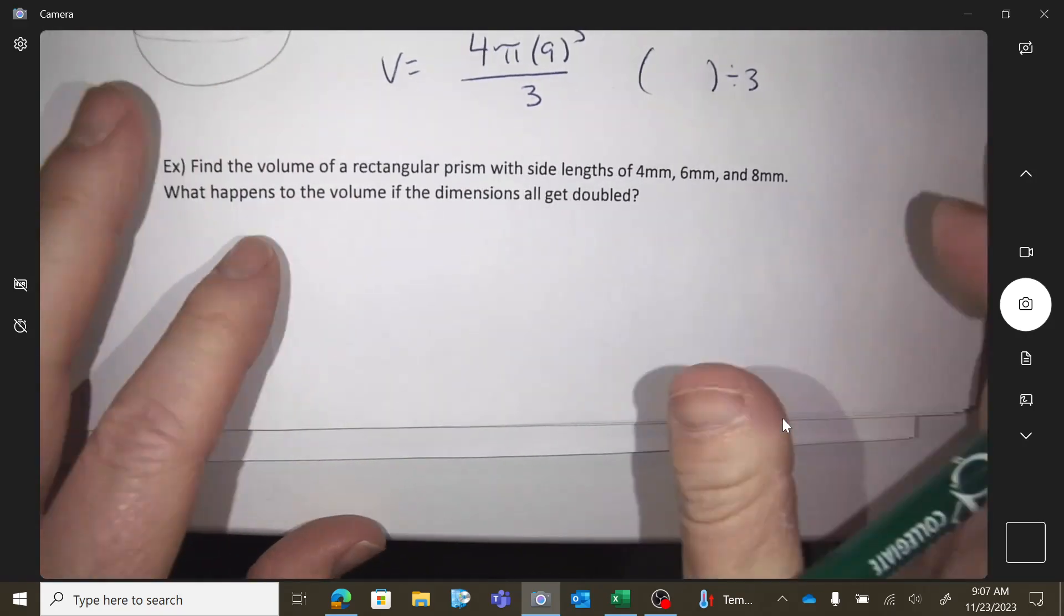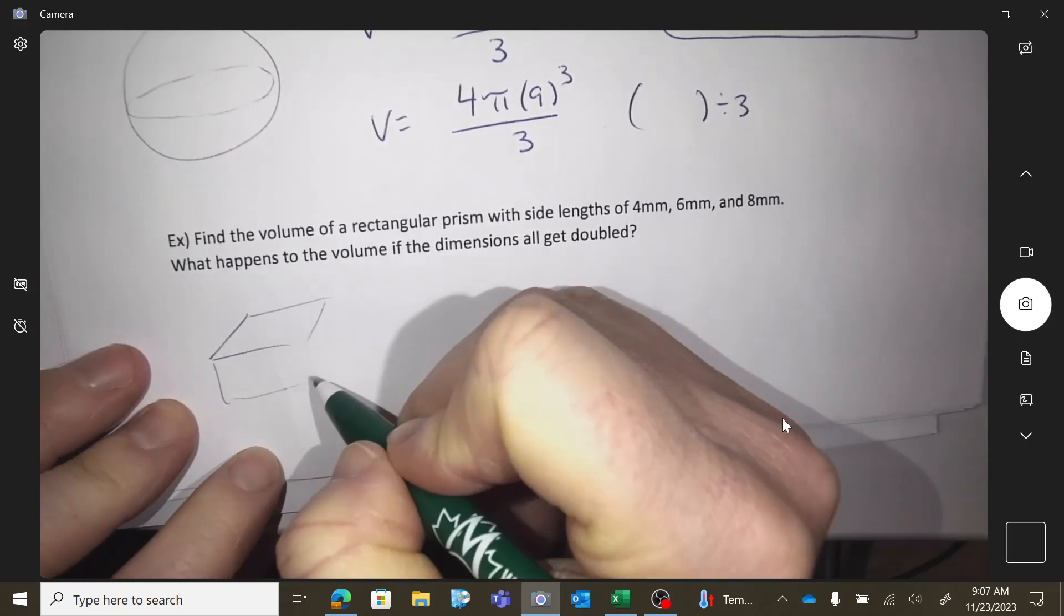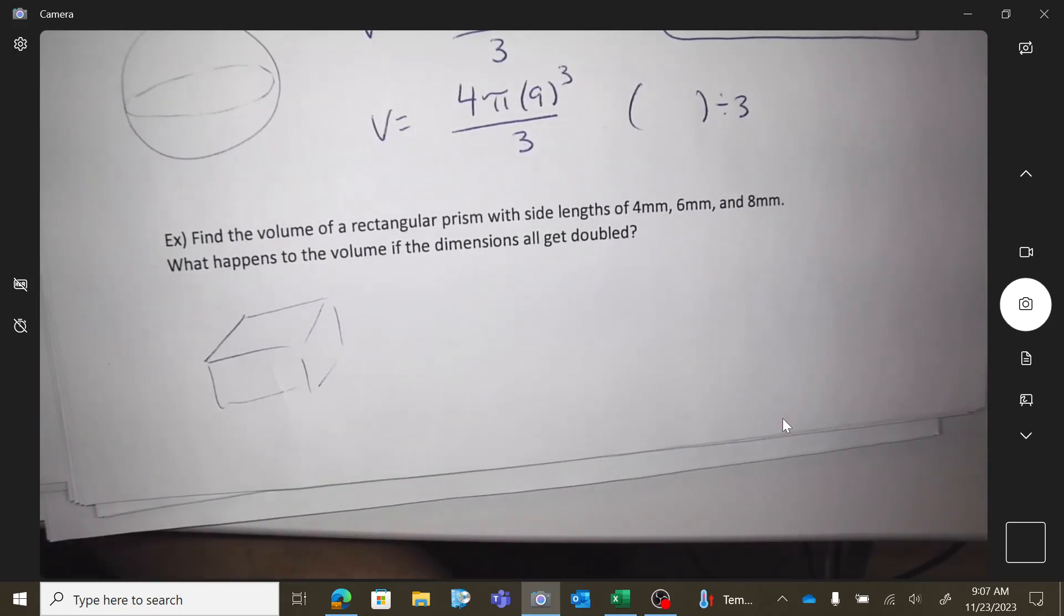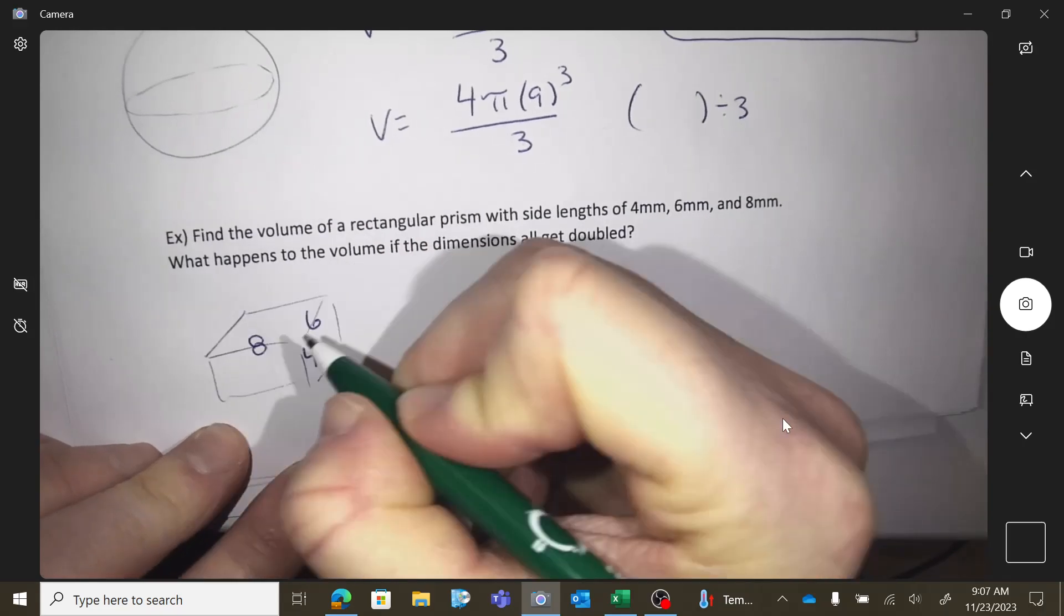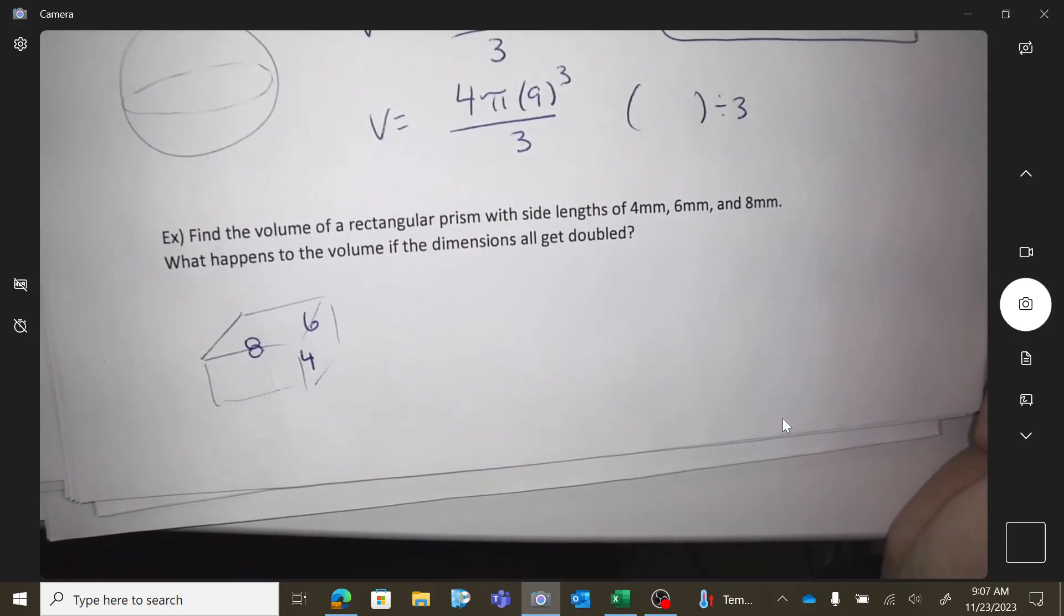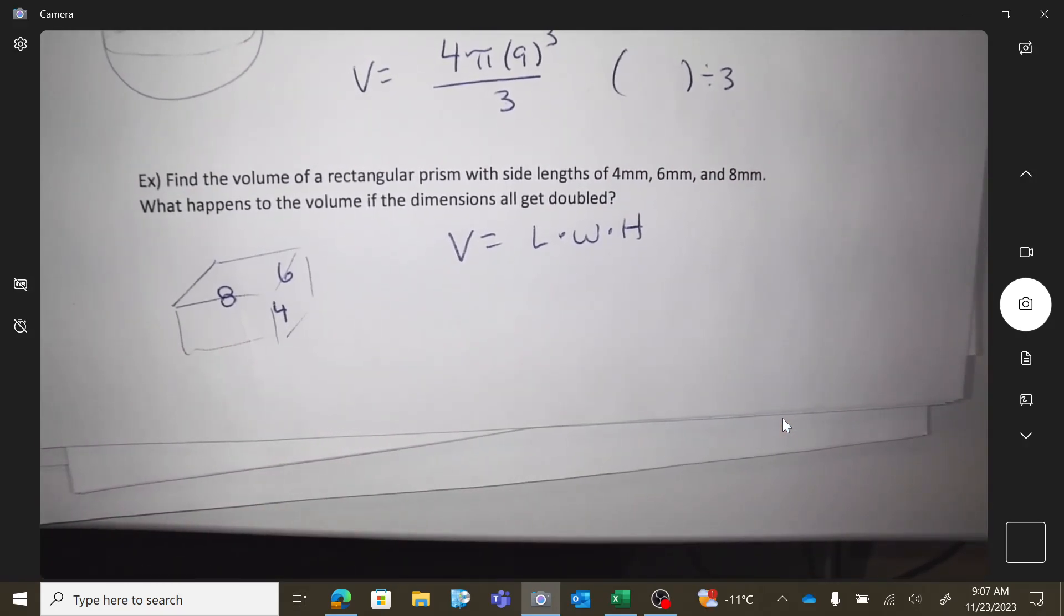Okay. The next is a volume of a rectangular prism. Okay, so it's like a box. Rectangular prism is a box. So the side lengths are, there's a 4, a 6, and an 8. Okay? So finding a formula. So find your formula that would match on your sheet. So length times width times height. It doesn't matter what you're labeling what.